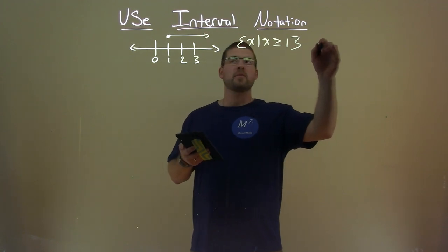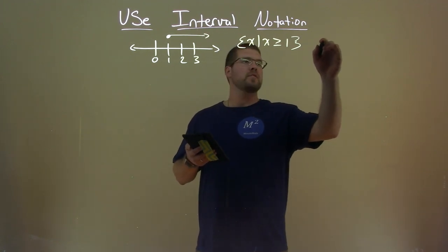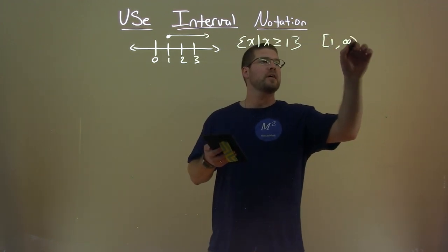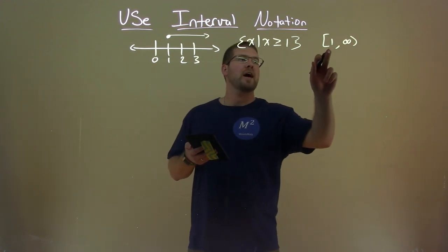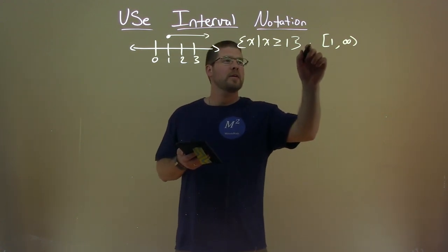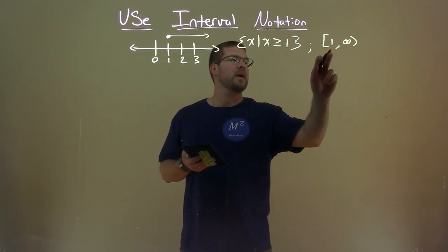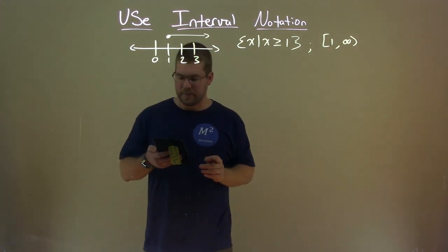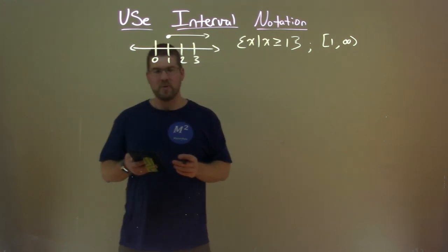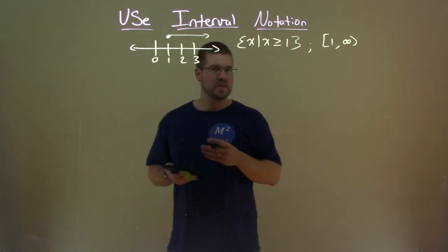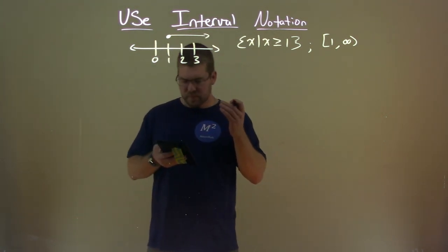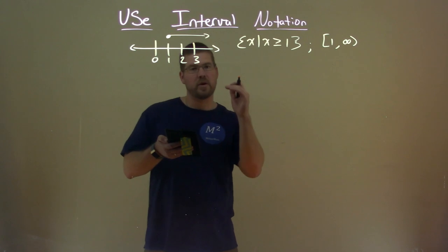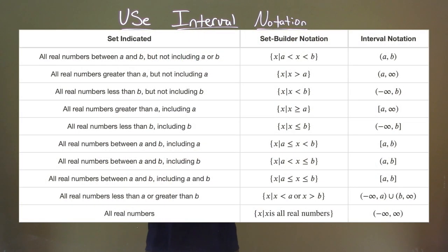In interval notation, we would see this as 1 to infinity, saying that x can equal 1 but then it can go to infinity. So I'm going to go through a whole bunch of these here and you can see how they're going to look. I'll point out a few things.